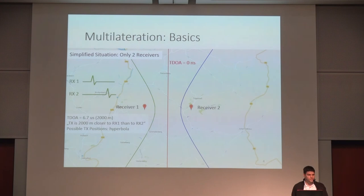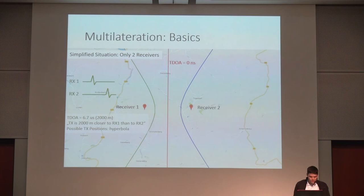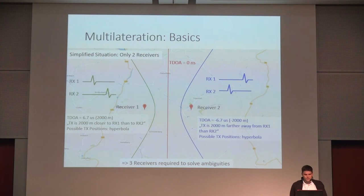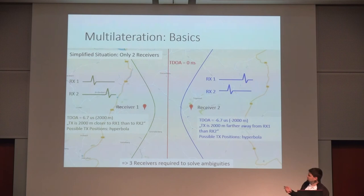What happens if the TDOA is not zero? In this case it's 6.7 microseconds. You can calculate a distance from it by multiplying with the speed of light, giving 2,000 meters. The statement is that the transmitter is 2,000 meters closer to receiver one than to receiver two. If you plot all possible positions you come up with a hyperbola, and in the focal points you can find the receivers. A TDOA can also be negative, so the signal arrives first at the second receiver, meaning the transmitter must be located more towards receiver two, giving a hyperbola expanded in that direction.